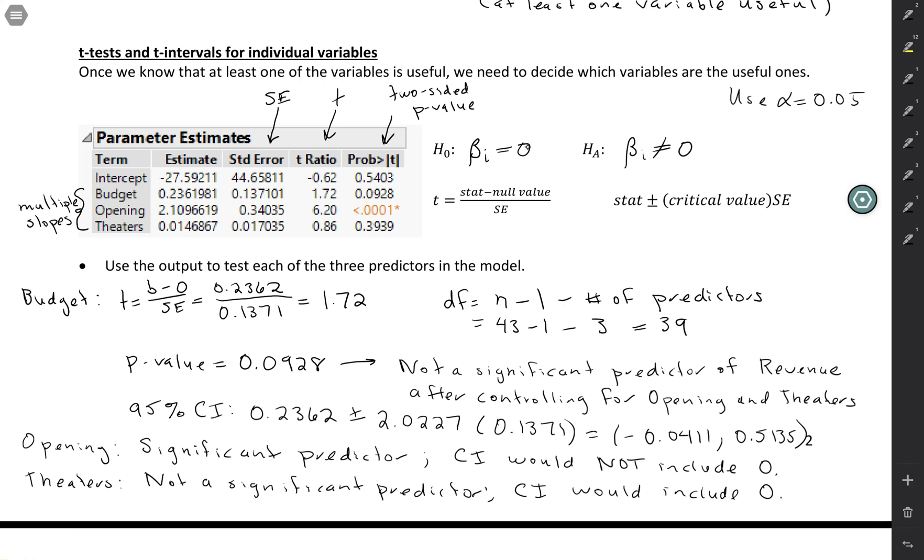So we talked about two different types of hypothesis tests. You start off with an F-test for the overall model, and then if that one is significant, then you follow up with t-tests to figure out which variables are the useful ones.